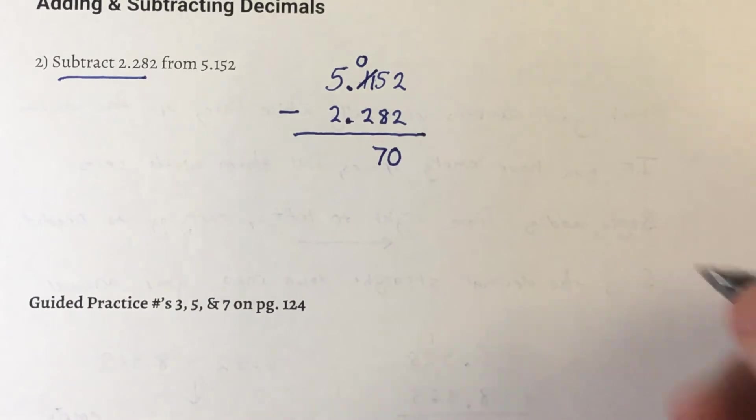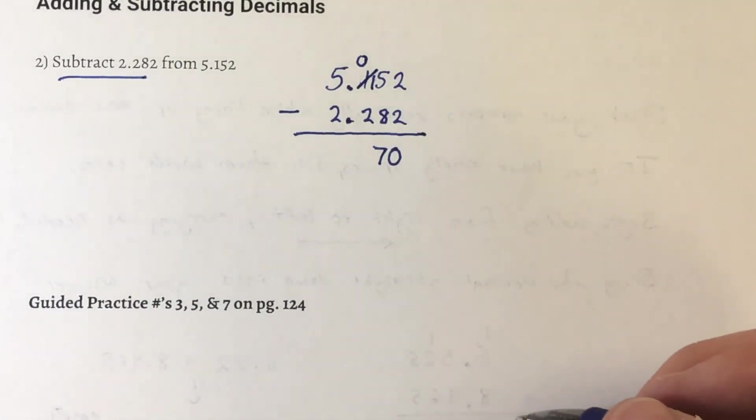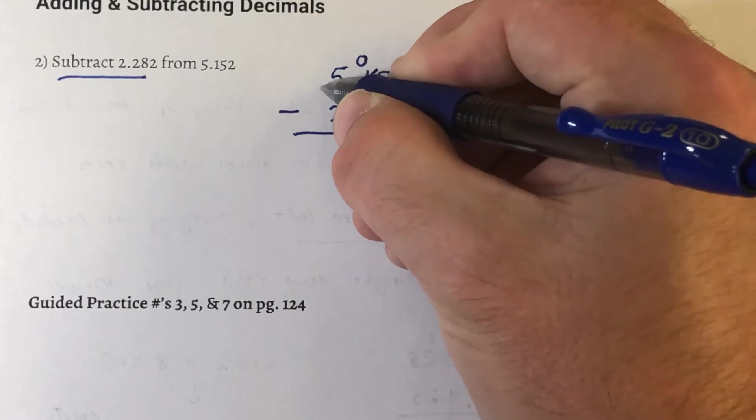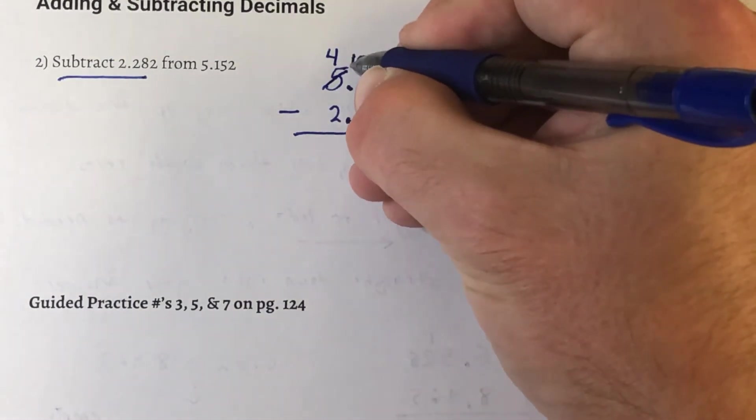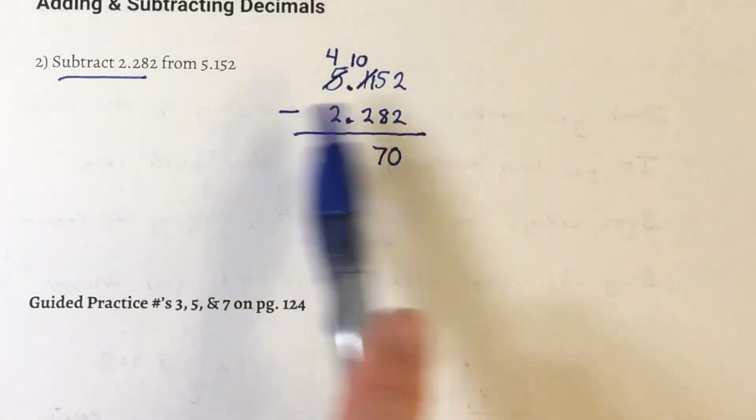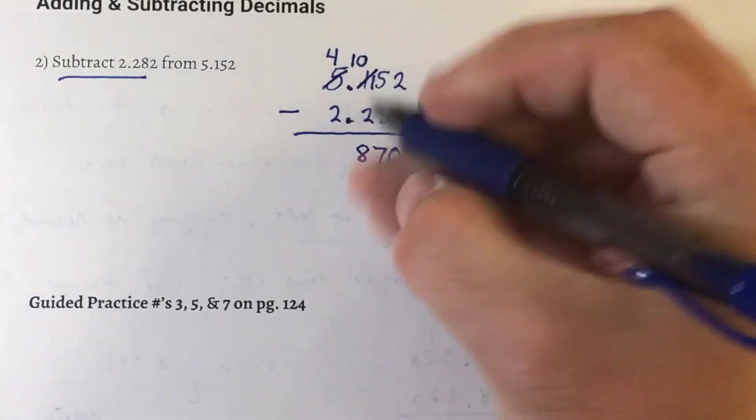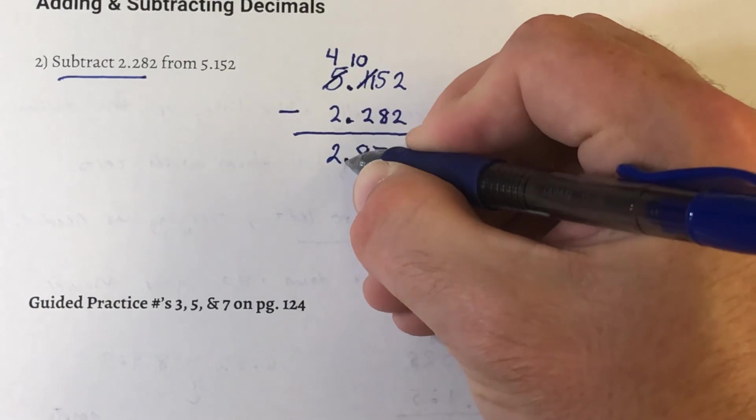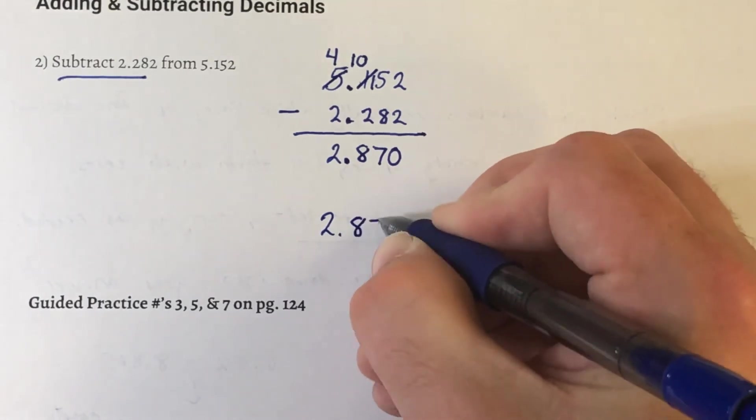Next, we're going to take 0 minus 2. Well, if I took away 2 from 0, I'm going to get a negative number. We can't do that. So we're going to borrow from the next column over, the 5. That becomes a 4. Where does the 1 go that I took away from it? Next to the 0, so now that's 10. 10 take away 2 is 8. Last, 4 take away 2 is 2. Now we're going to bring our decimal straight down into our answer between the 2 and the 8. So our answer is 2.870.